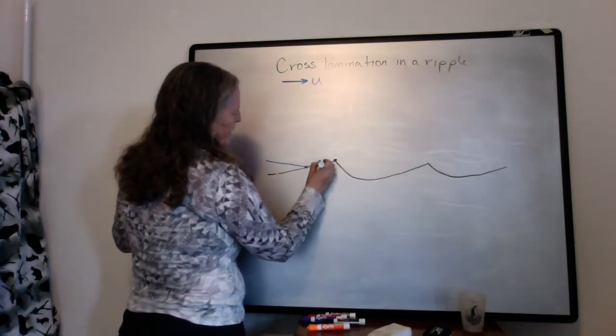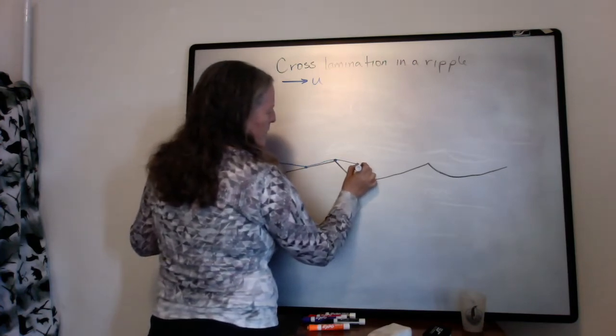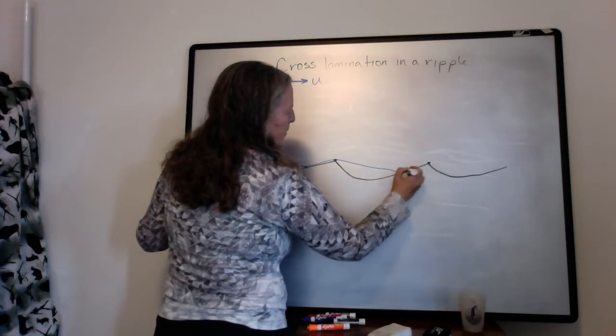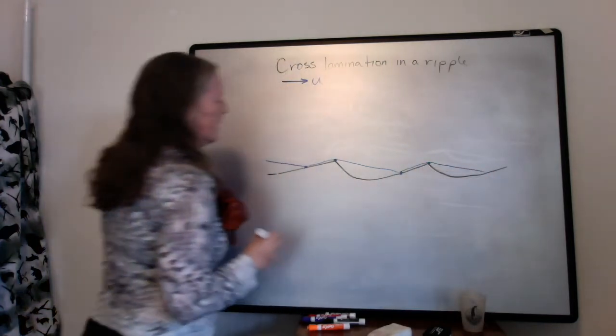our separation point, where it's far from the bed, where it leaves the bed, and that happens periodically as we go from one ripple crest to the next.